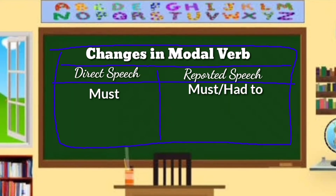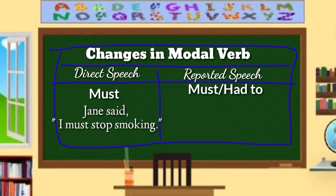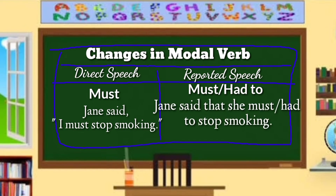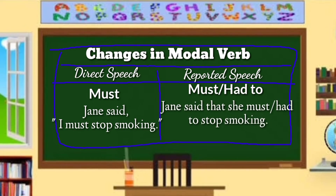Direct speech uses 'must,' while reported speech uses 'must' or 'had to.' For example — DS: Jean said, 'I must stop smoking.' RS: Jean said that she must/had to stop smoking. The modal verb 'must' can be retained or changed to 'had to.'